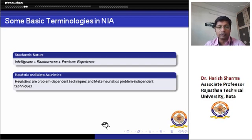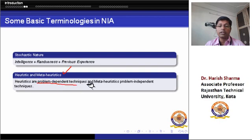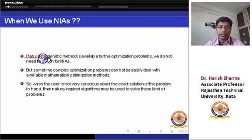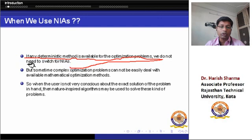The difference between heuristics and metaheuristics is very clear: heuristics are problem-dependent techniques, while metaheuristics are problem-independent techniques. An important point is: if any deterministic method is available for the optimization problem, we do not need to switch to a nature-inspired algorithm.